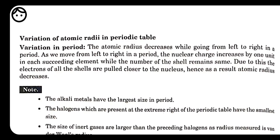For non-metals, they are always present in a diatomic form and they overlap one another. To calculate the radius of a non-metal, we take the distance from one nucleus to another nucleus and divide by two. The radius of non-metals is slightly less than that of metals because the atoms are simply overlapping into one another.